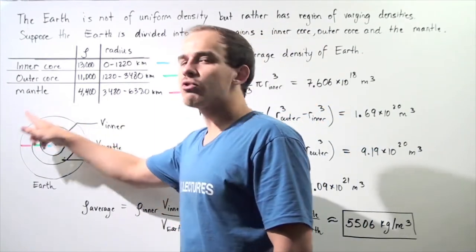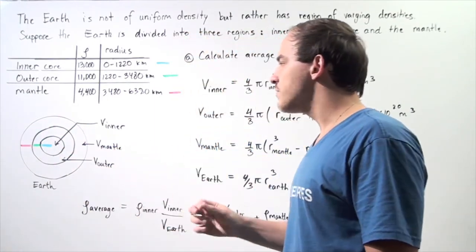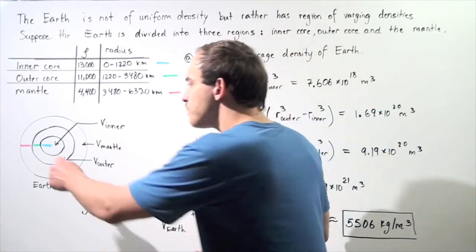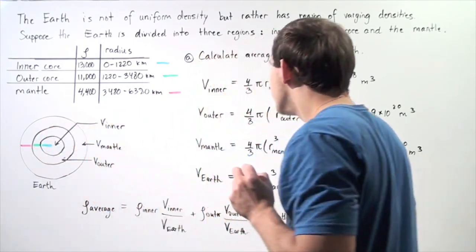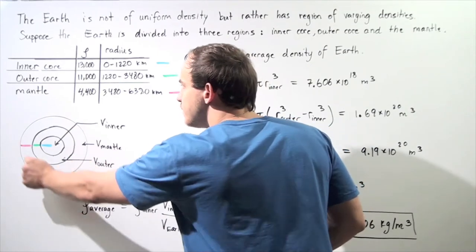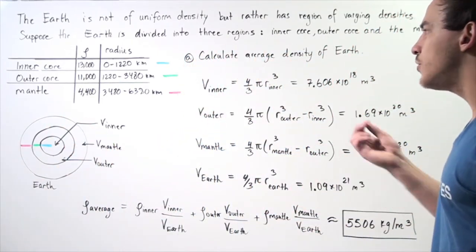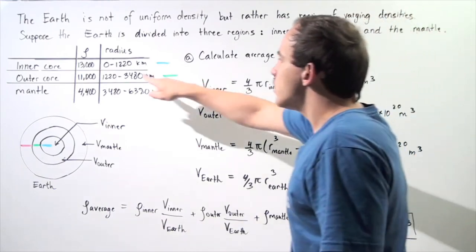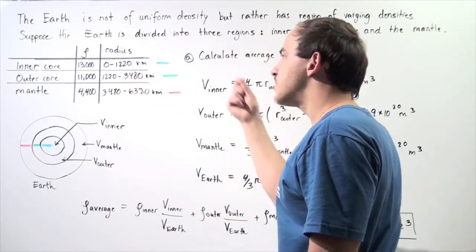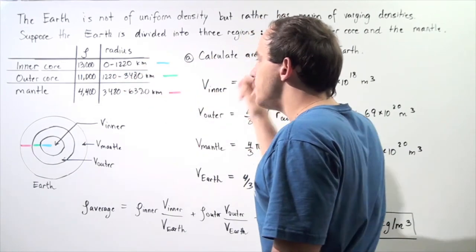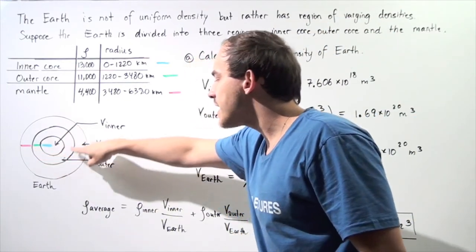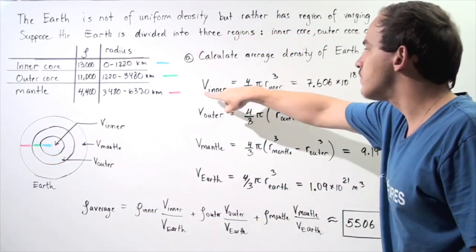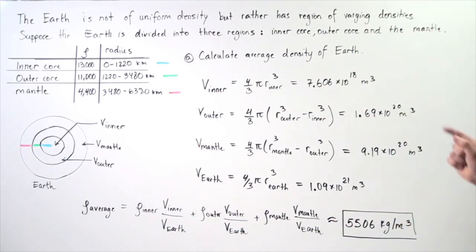To find the volume of the outer core, we have to find the volume of the entire sphere and then subtract the volume of the inner core. So to find the volume of this entire sphere, we simply take four-thirds pi multiplied by 3,480 times 1,000 to convert to meters, cube that, then subtract the volume of the inner sphere, and we get a value of 1.69 times 10 to the 20 meters cubed.